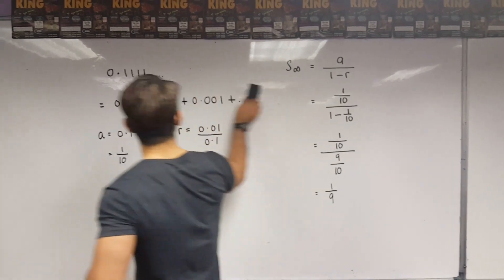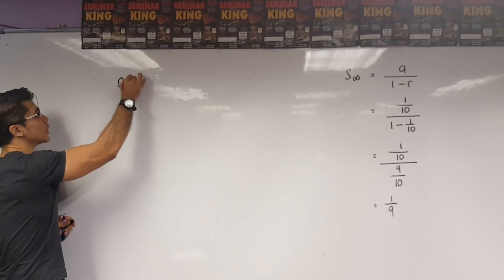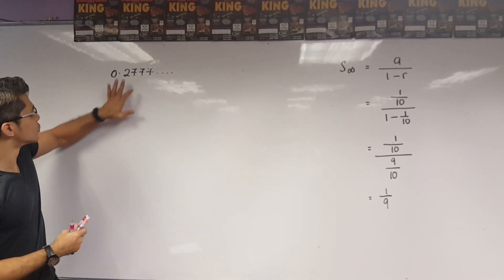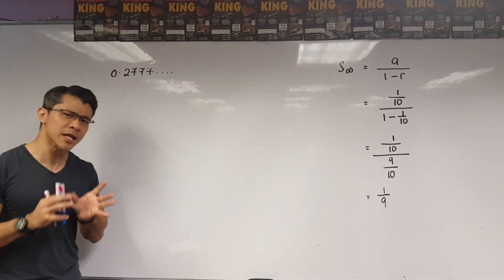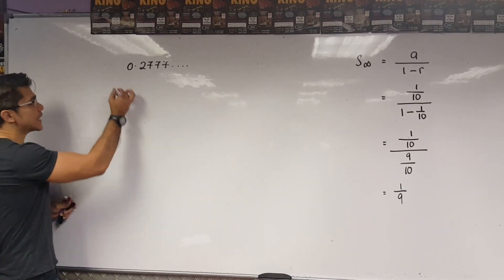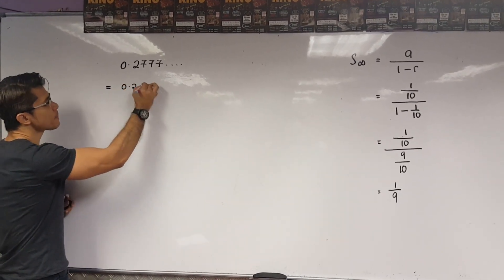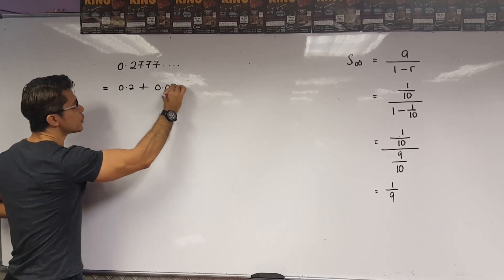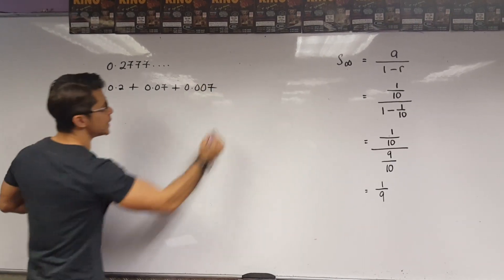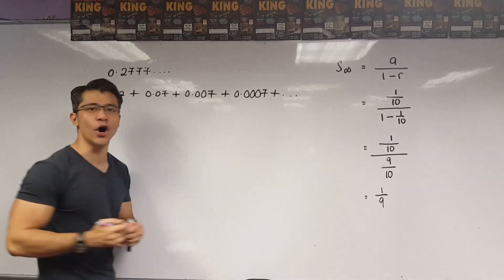Now, let's look at a more complicated decimal number. Let's say now, we are given 0.27777 and it goes on and on. Now, notice how we have 2 and 7. Well, the number 2 seems to be an odd number, I mean, the number that seems to stick out. So, again, if I break this decimal down to its individual components, we get 0.2 plus 0.07 plus 0.007 and plus 0.0007 and it goes on and on.